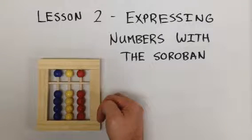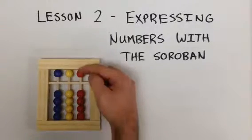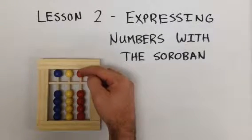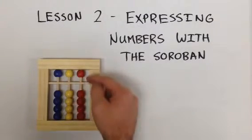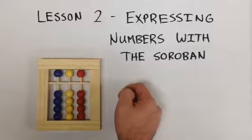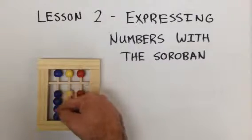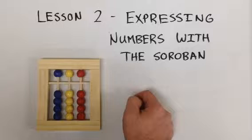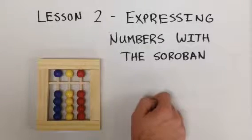Each of the red beads on the lower red bead count as 1, the upper red bead counts as 5, each of the lower yellow beads count as 10, the upper yellow bead counts as 50, each of the lower blue beads count as 100, and the upper blue bead counts as 500.